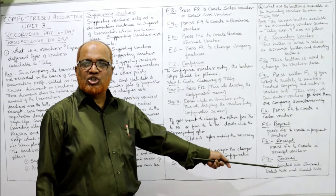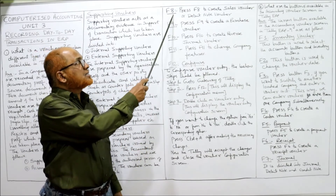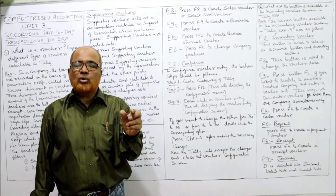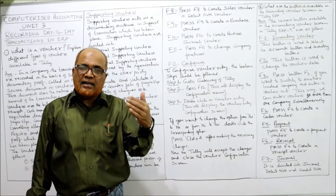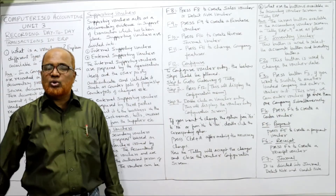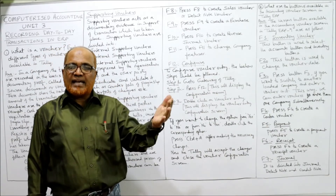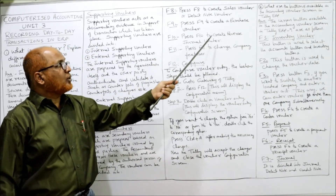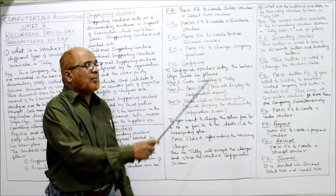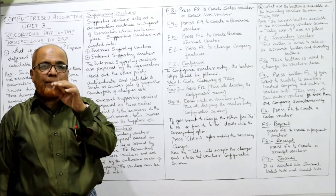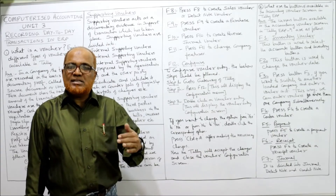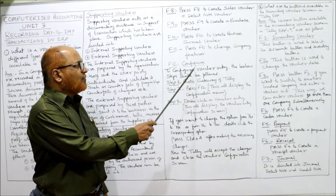F7 function key is for journal. F8 is used to create a new sales voucher or debit note voucher — press F8 to open the sales voucher and enter a sale transaction. F9 is used to create a purchase voucher. So F8 is for sales and F9 is for purchase. F10 is used to create a reverse journal voucher. F11 is used to change company features — press F11 if you want to change the company features.